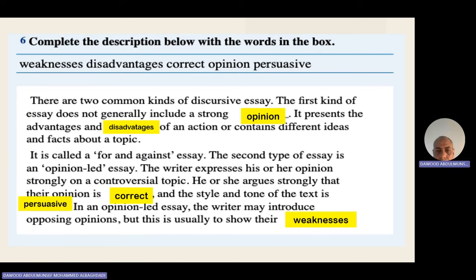For the first writing type, you have advantages and disadvantages and you write your own opinion at the last paragraph in the conclusion, if the examiner asks you. But in writing an opinion lead essay, you try to write your own opinion and point of view in each paragraph from the introduction. Your opinion is the most powerful.